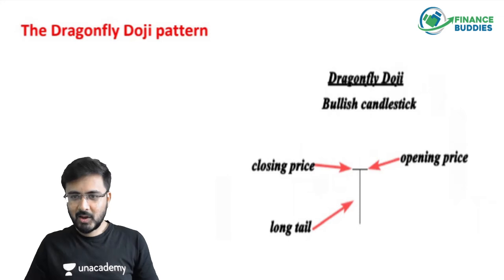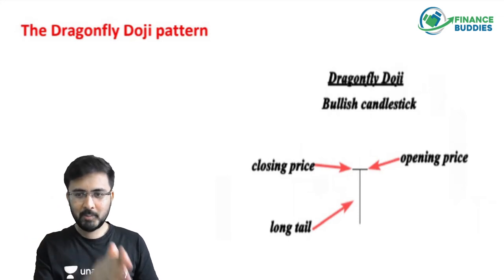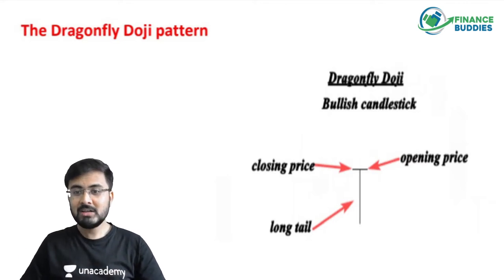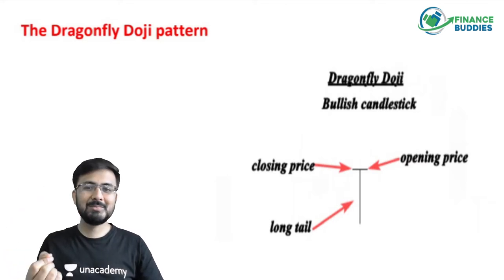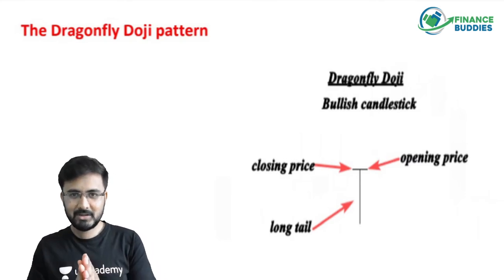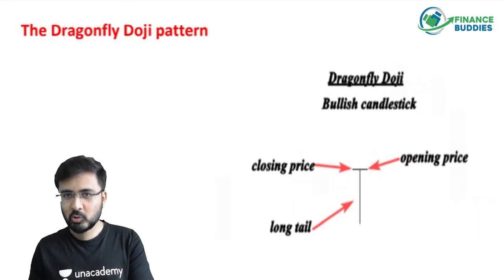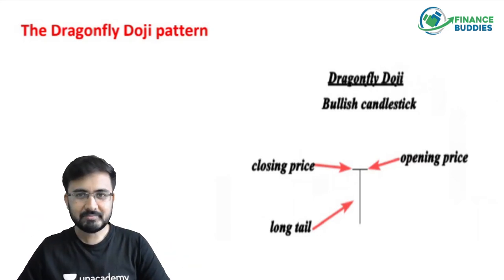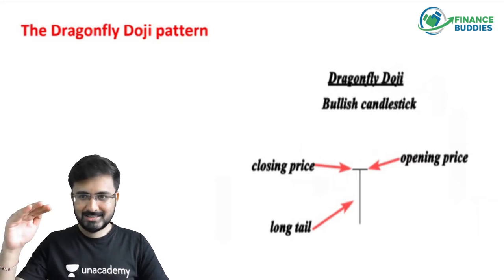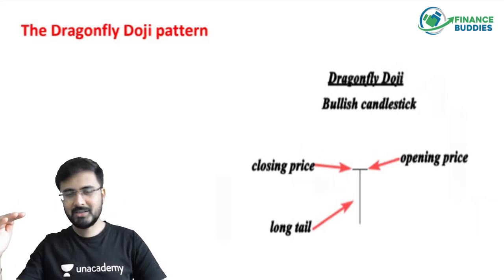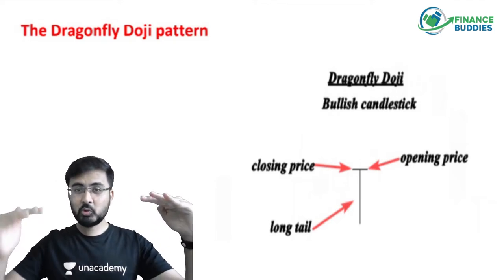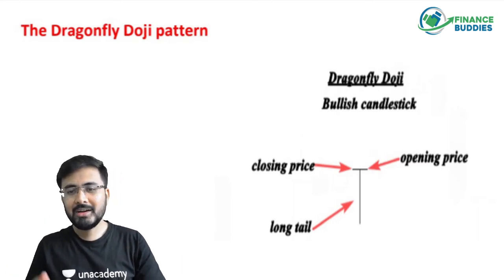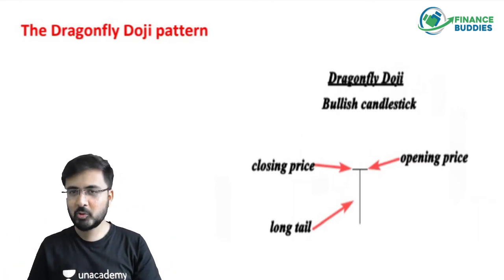In this pattern, you can see that it has a long tail and the opening and closing are again the same. So the market is actually not able to decide where it is going to go. Sellers tried their best to take the market lower, but they could not, because the closing happened at the same place where the opening happened. Suppose if the stock opened at 100 rupees and closed at 100 rupees, but throughout the trading session it went down to 80.